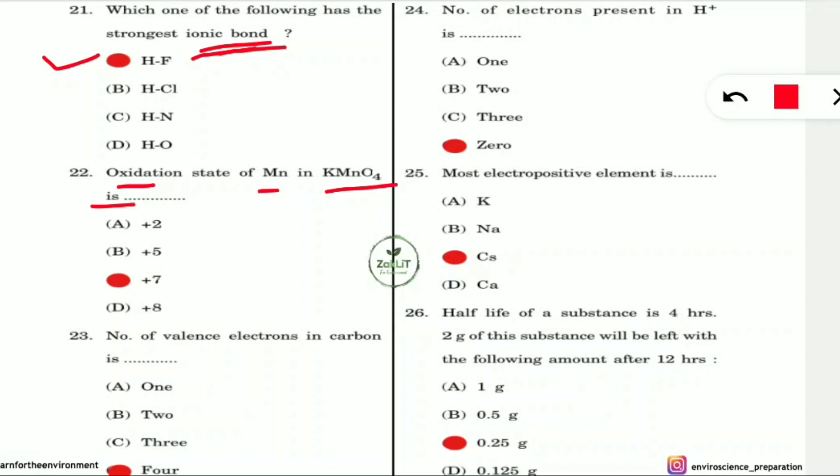Question 22: What is the oxidation state of manganese in KMnO₄ (potassium permanganate)? The oxidation state of manganese in KMnO₄ is +7.